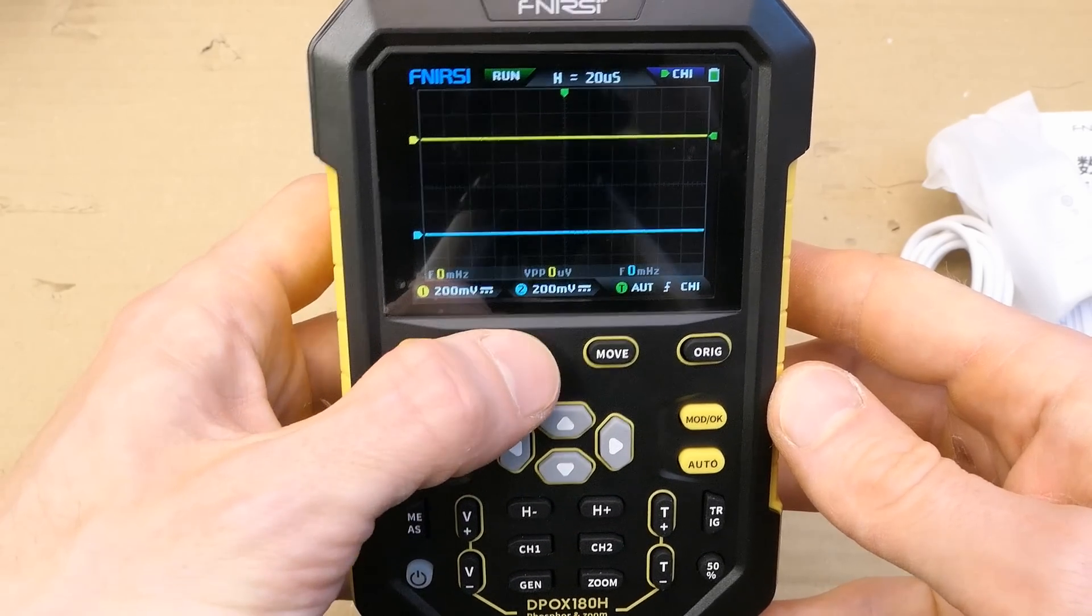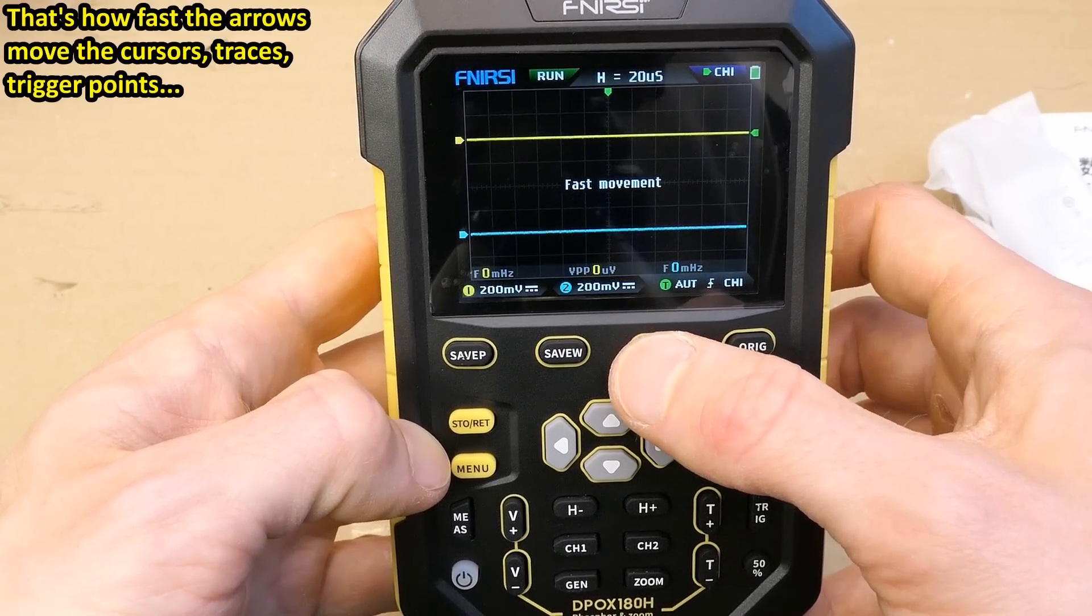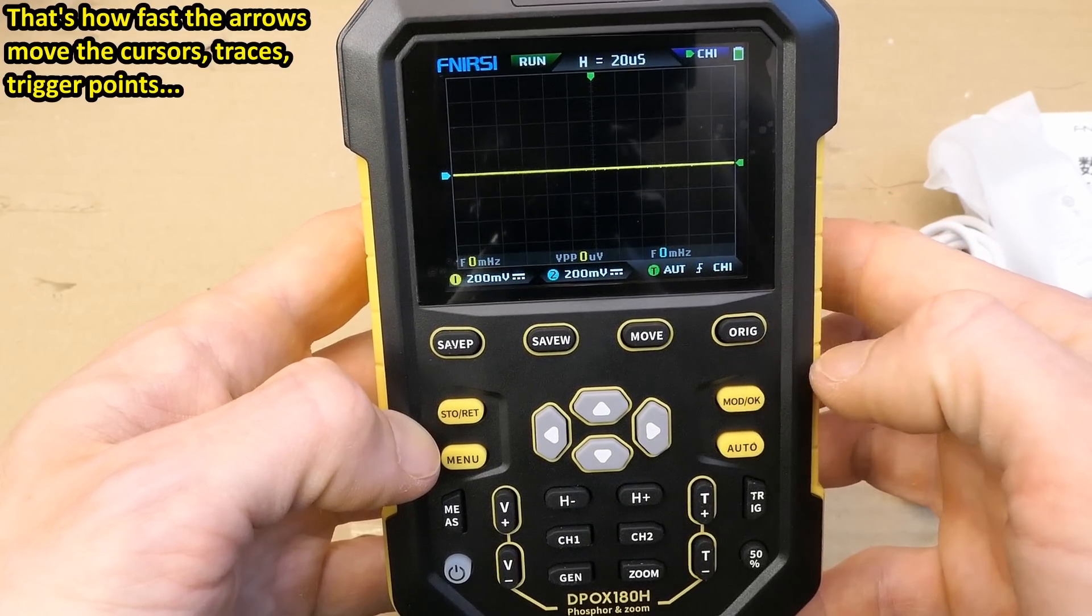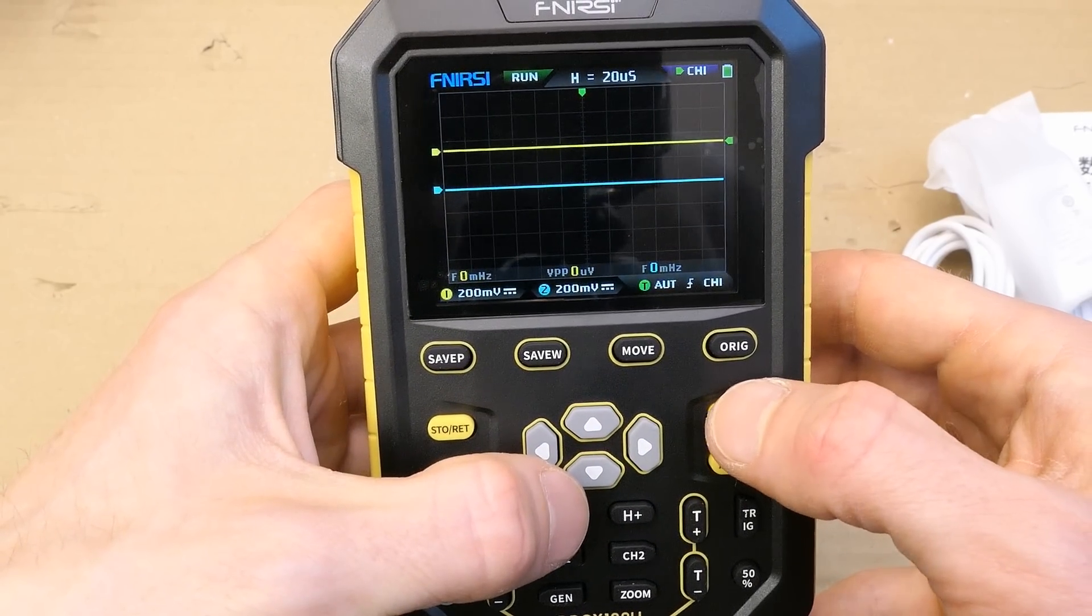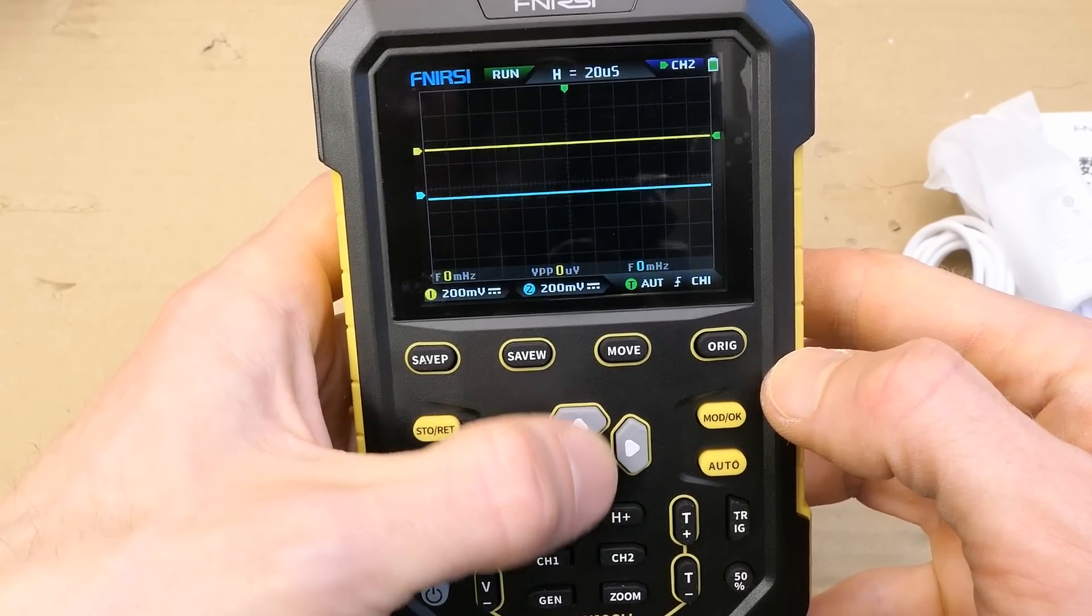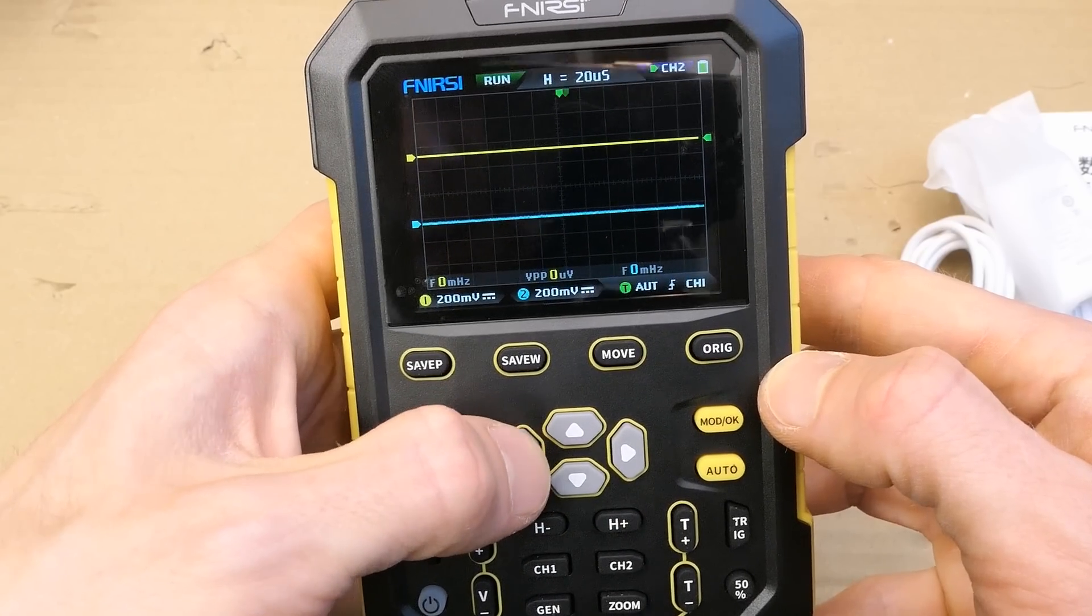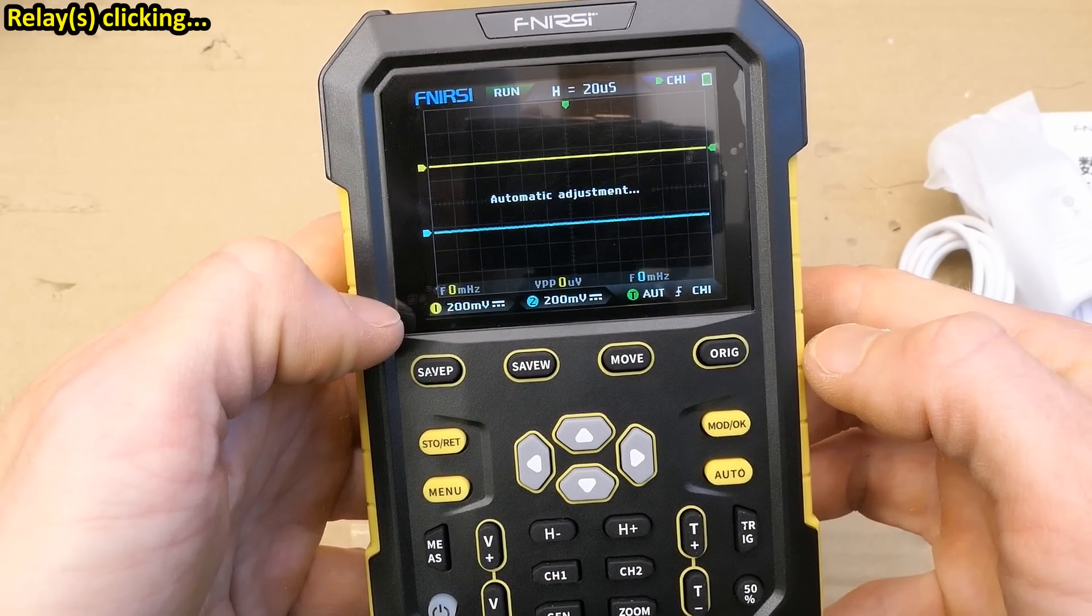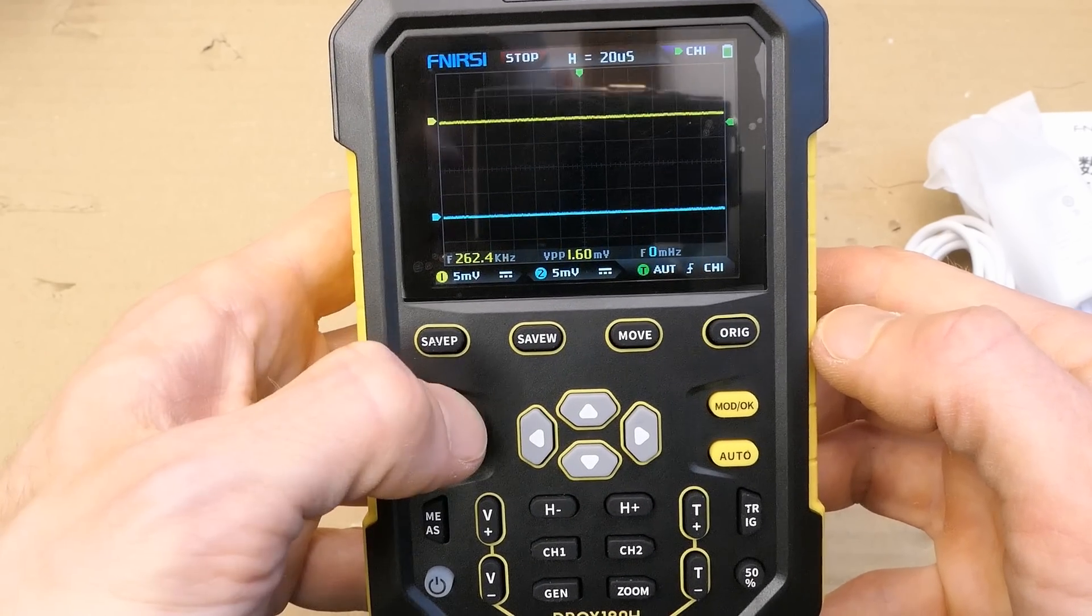This saves the screenshot, this saves the waveform, slow movement, fast movement, original setting, you can move the traces up and down, mode, now I'm moving the second channel, you can move it to the left or right, this is the trigger, automatic adjustment here, stop run.